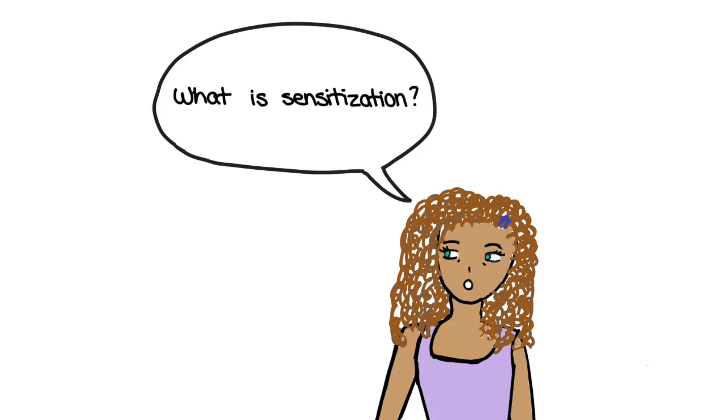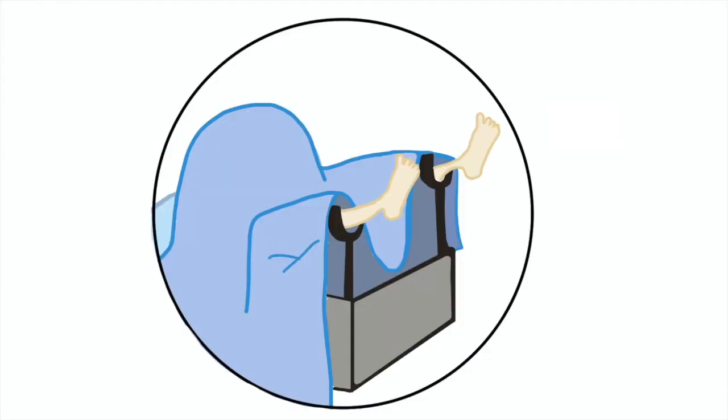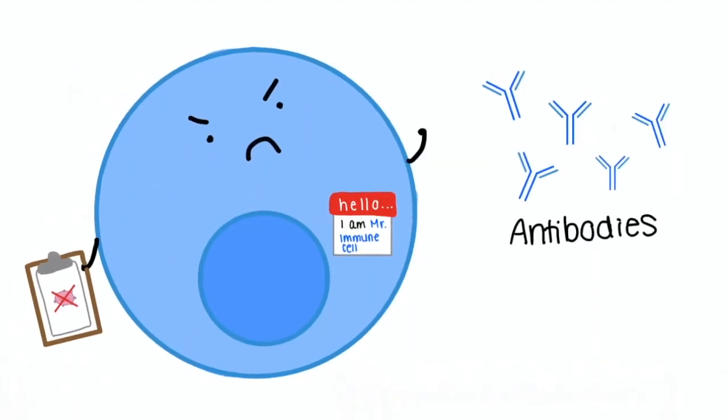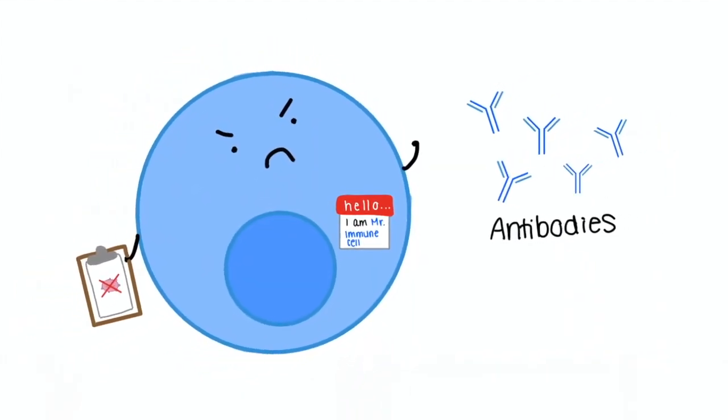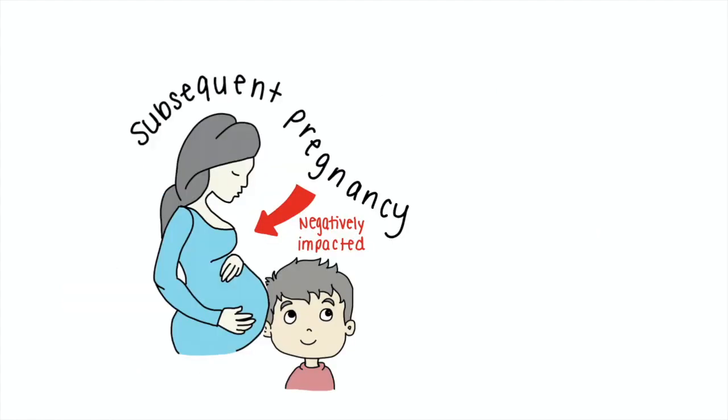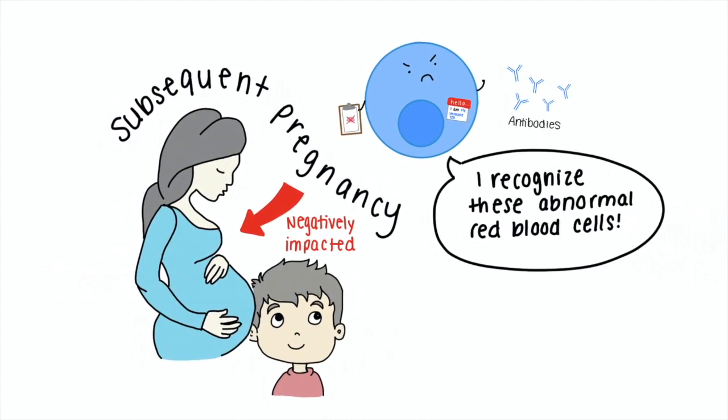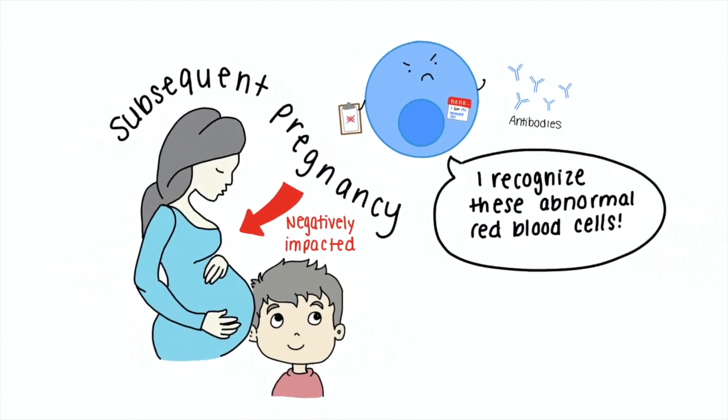What is sensitization? Sensitization is when your blood mixes with your baby's blood, for example, when you are giving birth. Your body produces antibodies when it is exposed to the baby's blood and these antibodies will stay in your system. If you become pregnant again, the antibodies can negatively impact the health of your next baby. This is because your immune system wants to protect your body and it will recognize your baby's blood as foreign.